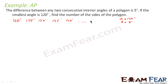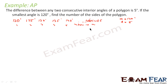Let's suppose there are n terms — that is, the polygon has n sides. The angles are 120, 125, 130, 135, 140, and so on up to the nth term, which is a plus (n − 1) into d. The sum of all angles, Sn, equals n by 2 into (2a plus n minus 1 into d), which equals n by 2 into (2 times 120 plus (n − 1) times 5).